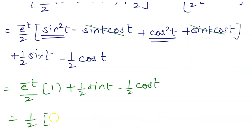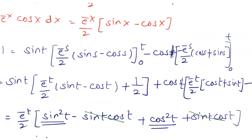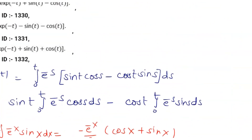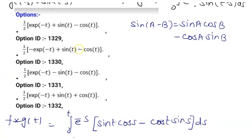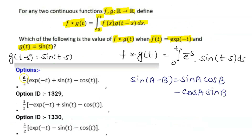Taking 1/2 as a common factor, the final simplified result is f*g(t) = (1/2)·[e^(-t) + sin(t) - cos(t)]. Comparing with the given options, the correct answer is option 1: e^(-t) + sin(t) - cos(t), with option ID 1329. Thanks for watching!